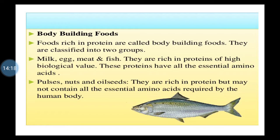The second category is body-building foods. Foods rich in proteins are called body-building foods. Milk, eggs, meat, and fish are rich in proteins of high biological value — they have all essential amino acids. Pulses, nuts, and oil seeds are rich in proteins but may not contain all essential amino acids required by the human body. If you are not understanding any term, find its meaning in a dictionary or on Google.